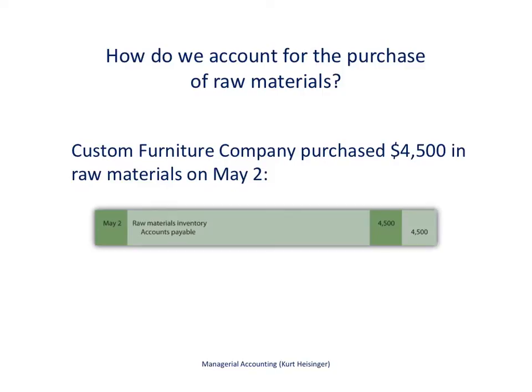Let's start with accounting for raw materials. Assume we purchase $4,500 in raw materials on May 2nd. To record that, we debit raw materials inventory — increasing it — for $4,500, and we credit accounts payable $4,500, assuming we purchased it on credit.